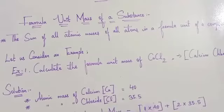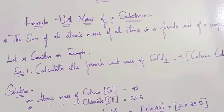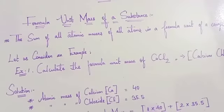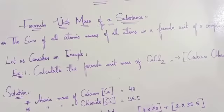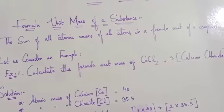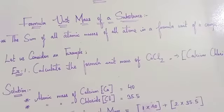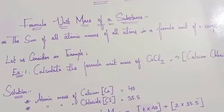Formula unit mass is the sum of all atomic masses of all the atoms in a formula unit of a substance or a compound. The only difference between molecular mass and formula unit mass is that substances are represented in formula unit mass because they are ions.